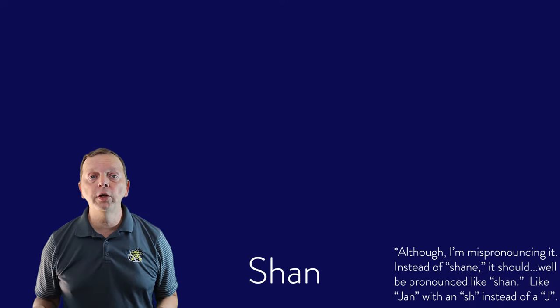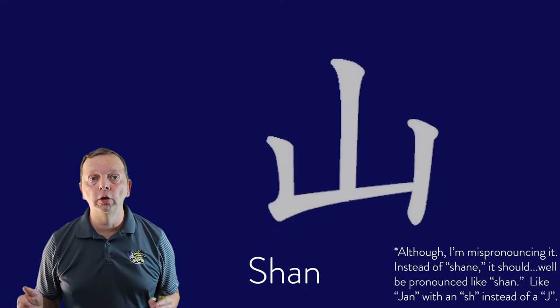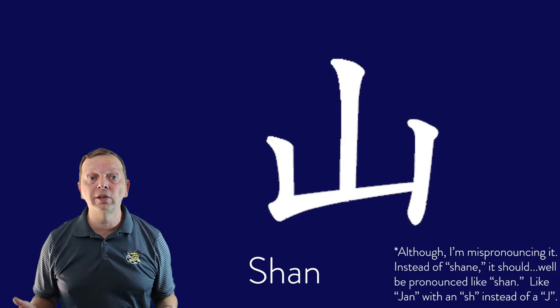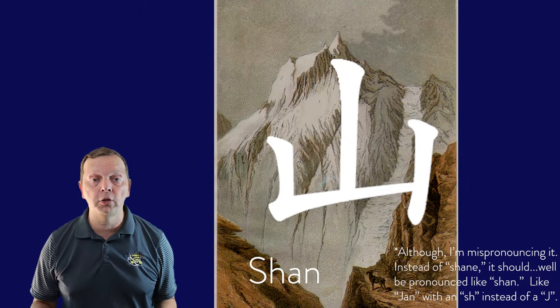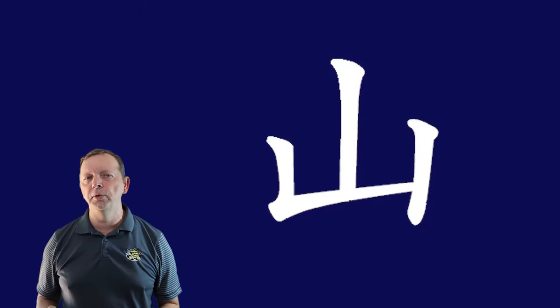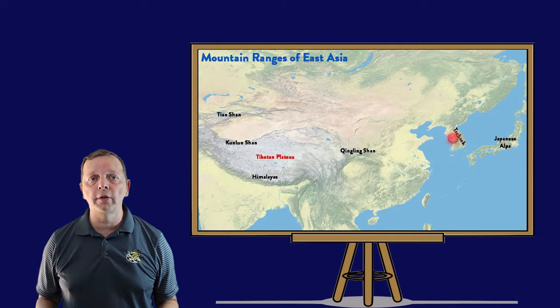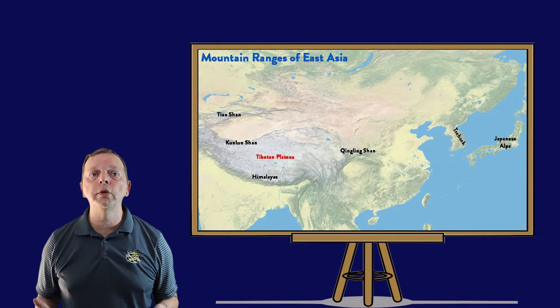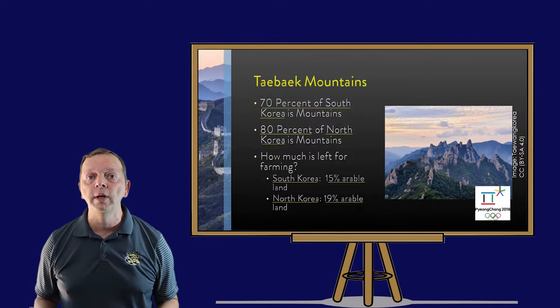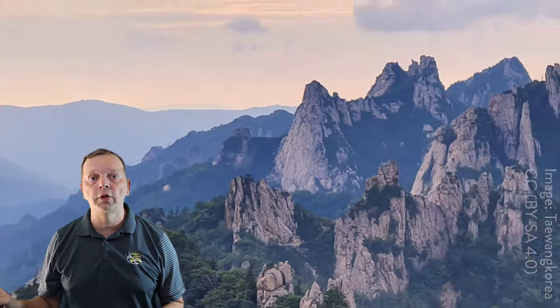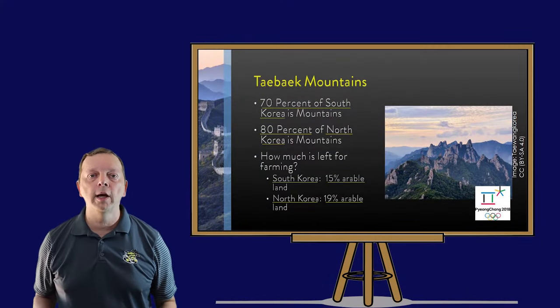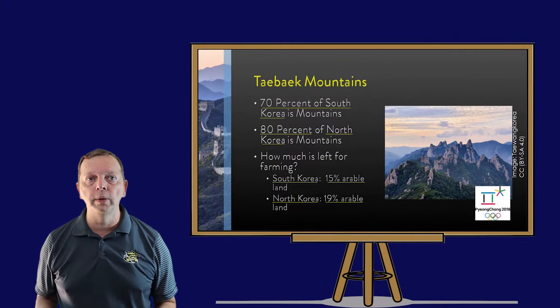Can you figure out what the word for mountains in Chinese might mean? It's 'Shan.' The character kind of looks like a mountain, because Chinese is actually a pictograph language, which we'll talk about in a few lessons. The Taibak Mountains in South Korea played host to the 2018 Winter Olympics, and this mountain range stretches through both North and South Korea.